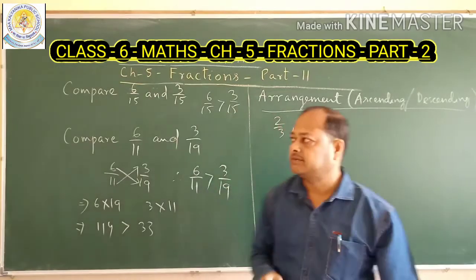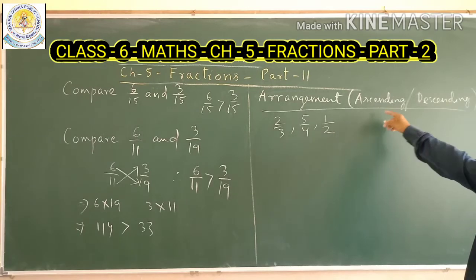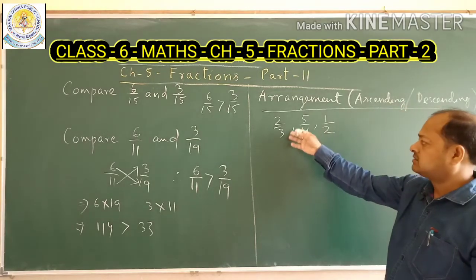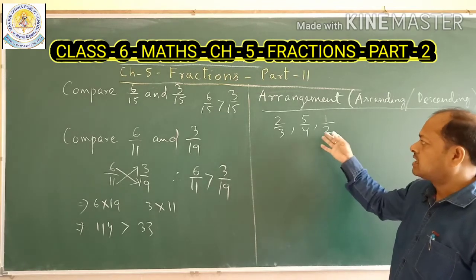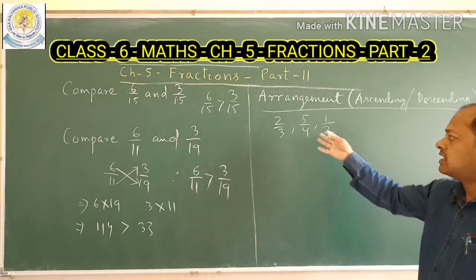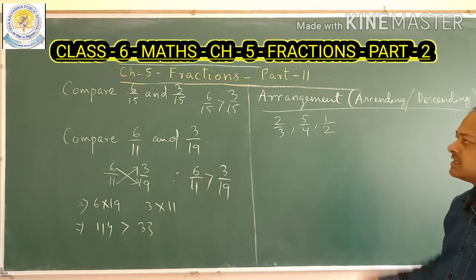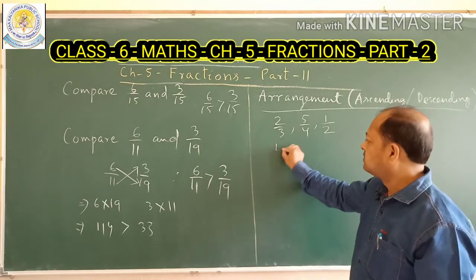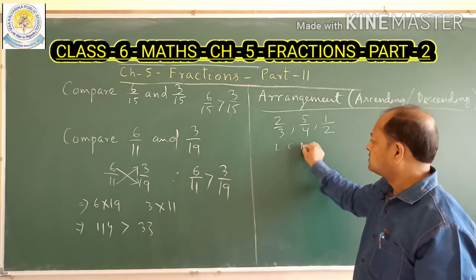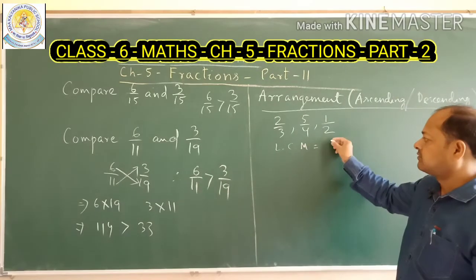Now look at this question: arrangement in ascending and descending order. So how to arrange fractions having different denominators — which is greater and which is smaller? When you have more than 2 fractions, you can arrange them in ascending or descending order. The formula is: find out the LCM of the denominators of the fractions.